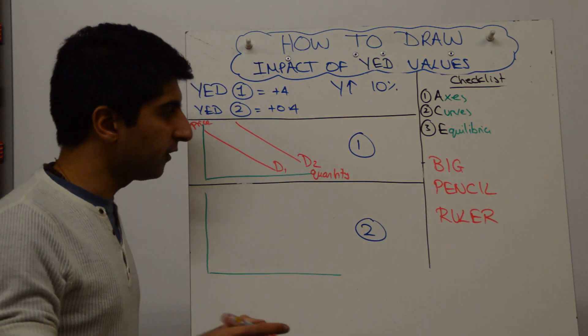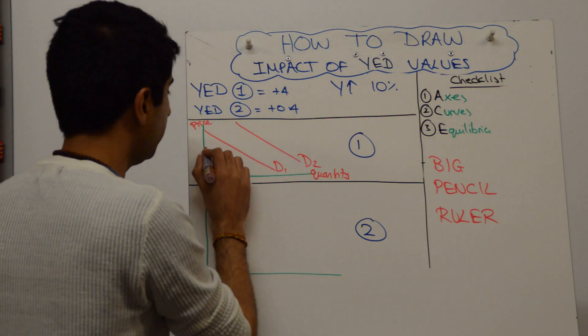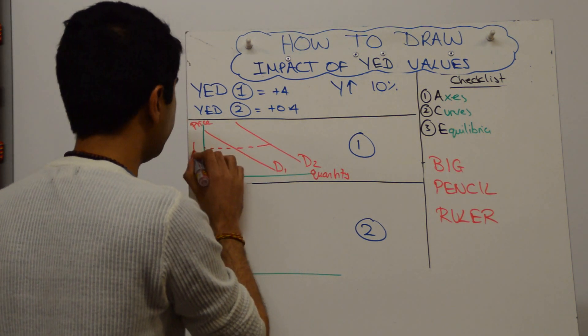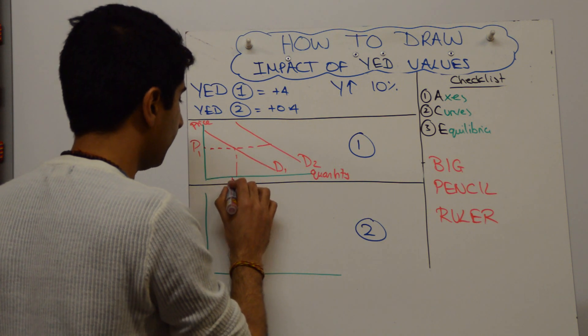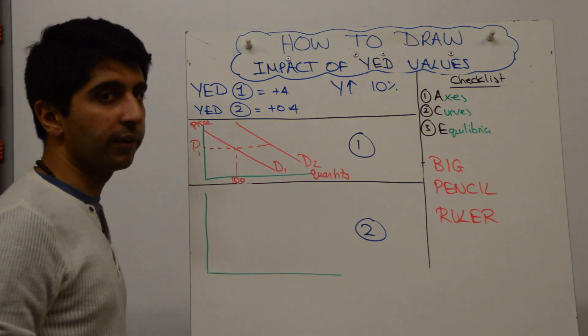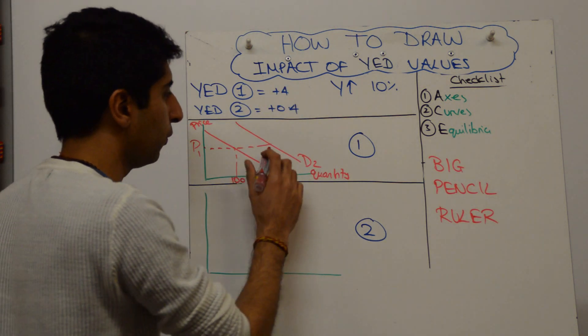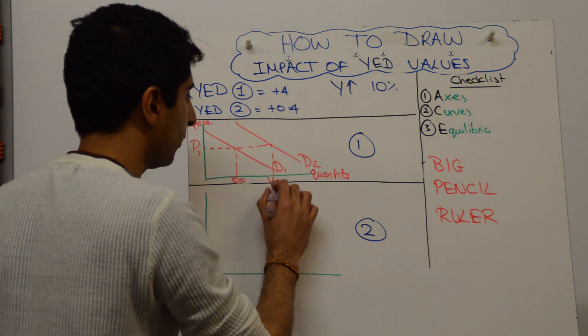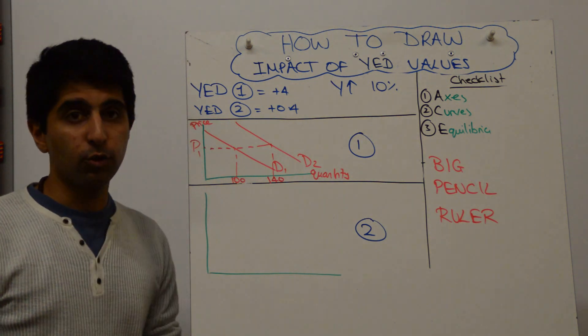But this is where you start then. So it's simple on the diagram. But what you do is you show one price, and keep the numbers simple. So let's say demand initially was 100, and now because of this rise in incomes and because we know YED is plus 4, the increase in demand will be 40%, taking us to 140.